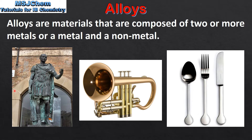Here we can see some examples of alloys. On the left we have a bronze statue, which is an alloy of copper and tin. In the middle we have a musical instrument made of brass, which is an alloy of copper and zinc. And on the right we have some cutlery made of stainless steel, which is an alloy of iron, nickel and chromium.